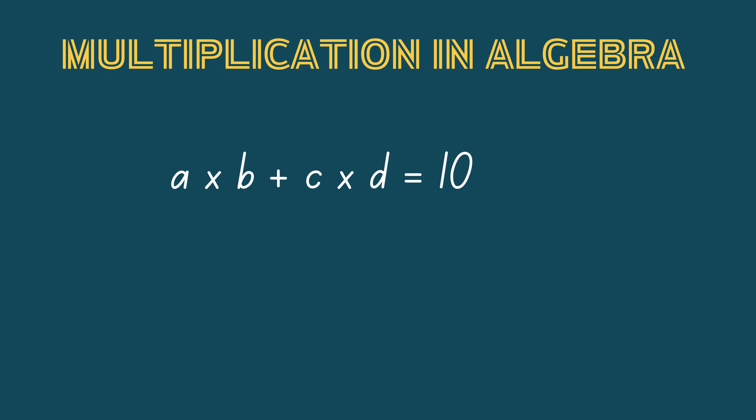For example, instead of this, we write AB times CD equals 10. Let's see what 3A means. Since the coefficient and variable are right next to each other, multiplication is implied, and we can say 3 times A.